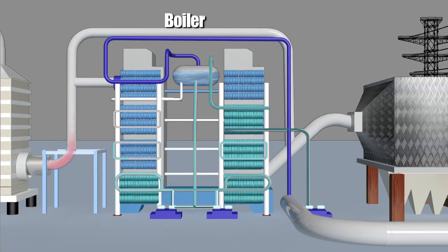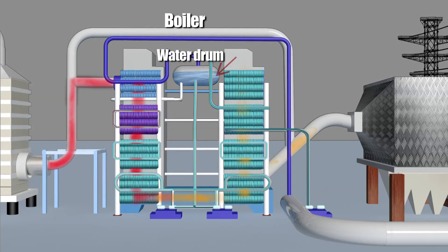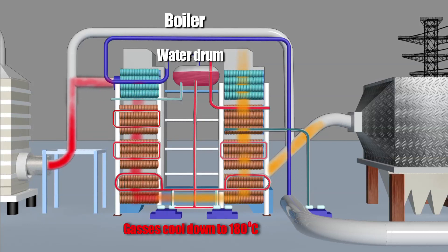The gases enter a super heater and then a set of boiler bank tubes. In these tubes, they transform into steam and then enter the water drums inside the tubes. Following this process, the gases cool down to about 180 degrees Celsius.